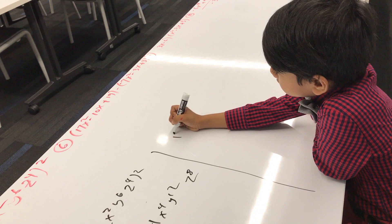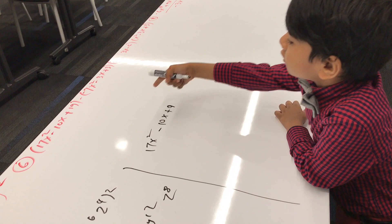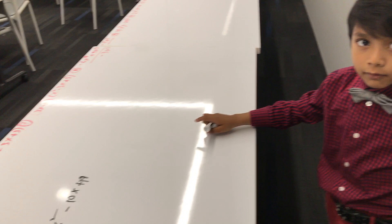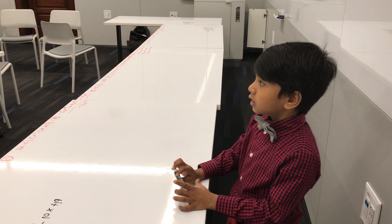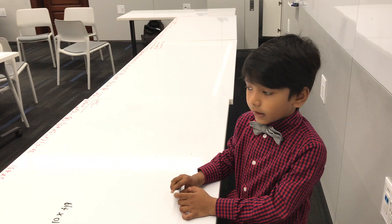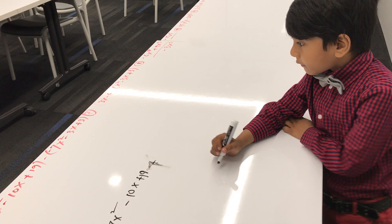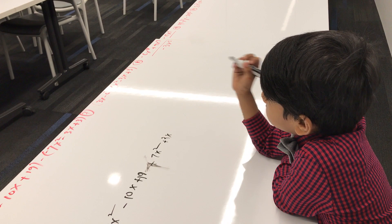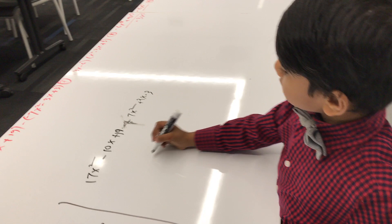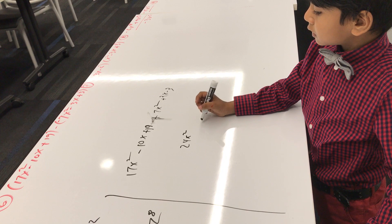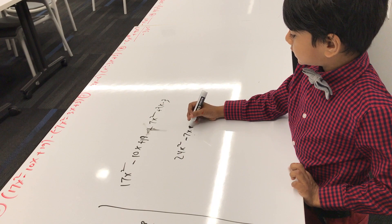Then 17x² minus 10x plus 19 — we distribute the minus to the right side. To help you with directions, try using your hands to make L's. The one that makes a perfect L is your left hand and the one that makes a backward L is your right. So minus minus is plus if you watch most of my videos. Plus 7x² plus 3x. And minus plus is minus. 17 plus 7 is 24. Minus 10 plus 3 is minus 7. And 19 minus 3 is 16. So that's our answer there.